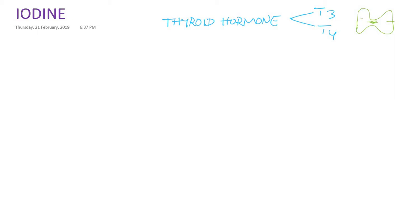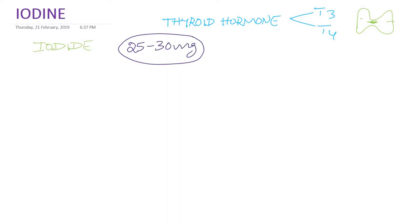Iodine is an important micronutrient required for thyroid hormone synthesis. We take iodine through our diet in the form of iodide. The total body iodine content is about 25 to 30 milligrams. Out of this, 80 percent is present in the thyroid gland, and the remaining 20 percent may be present in the salivary gland, mammary gland, or some other cells or tissue.